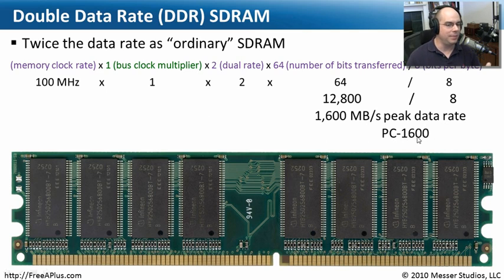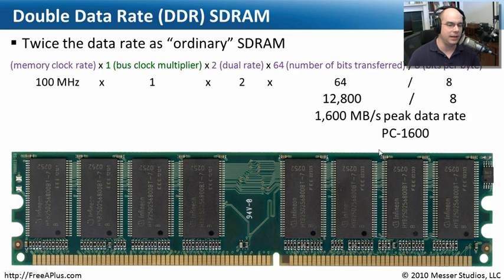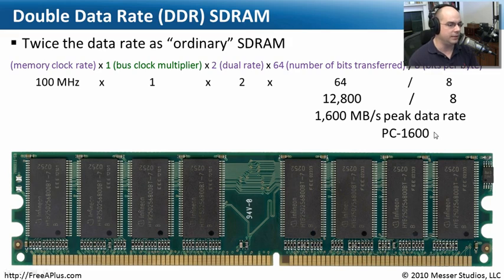Instead of describing DDR speed as the clock rate, we describe it by its peak data rate — that's a big difference. This is the only formula you really need to know for the A+ exam to calculate the peak data rate of certain types of memory. You just plug in the right numbers, and once you do it a couple of times it becomes much easier to understand.